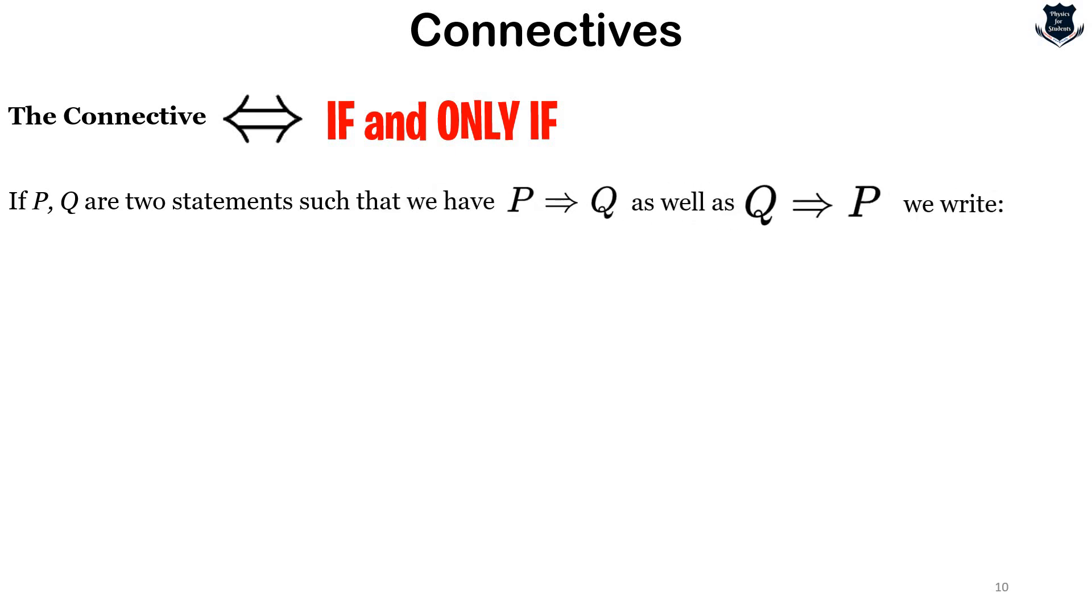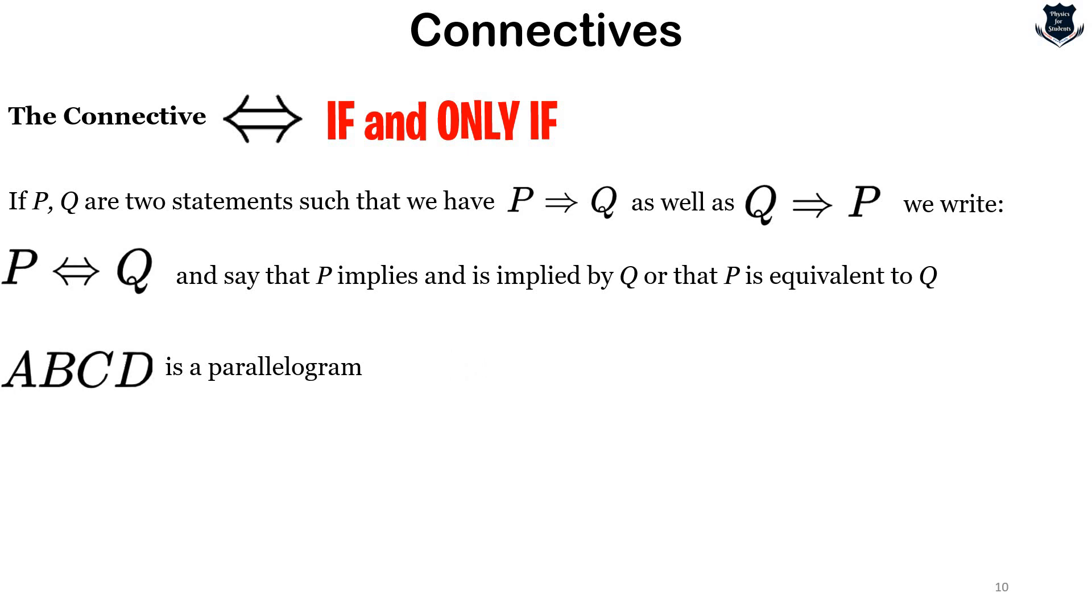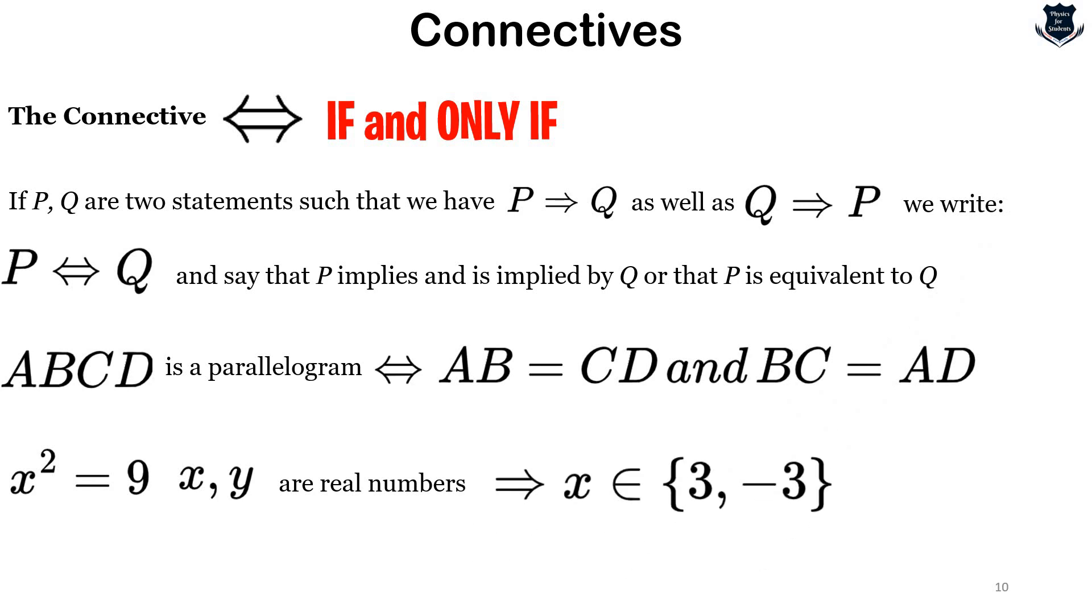The next connective is 'if and only if,' sometimes called equivalent. If p and q are two statements such that p implies q and q implies p, we write it with this symbol. We say that p implies and is implied by q, or that p is equivalent to q. For example, if ABCD is a parallelogram, then AB = CD and BC = AD. If x² = 9 and x and y are real numbers, then x is a member of {3, -3}.